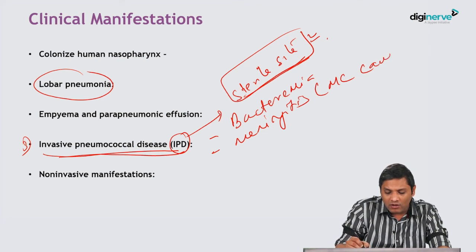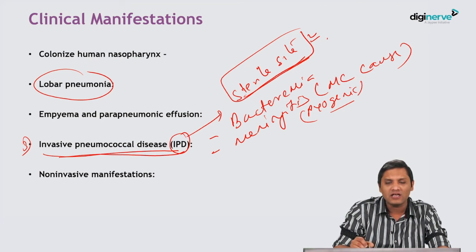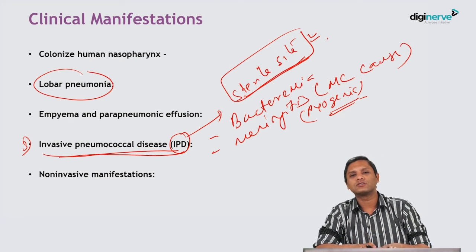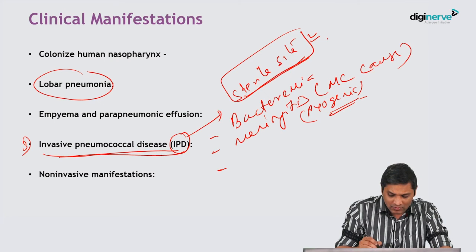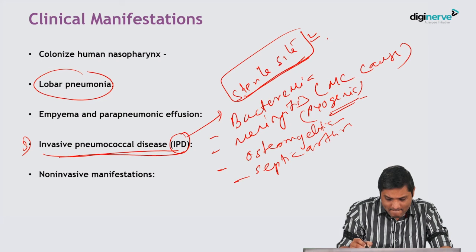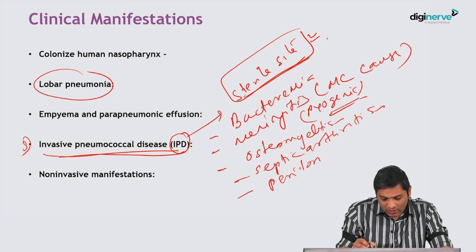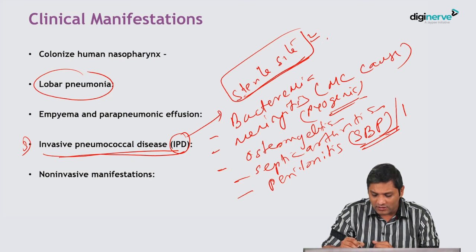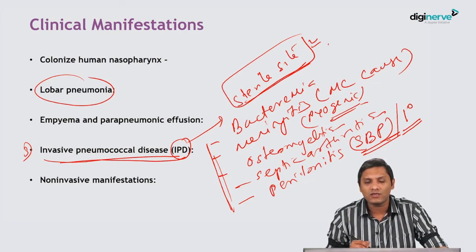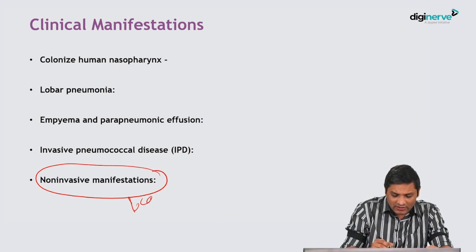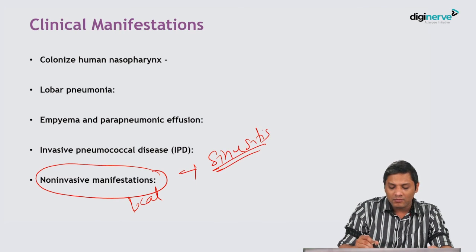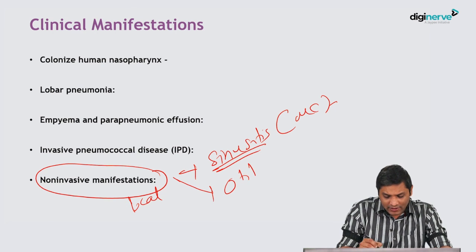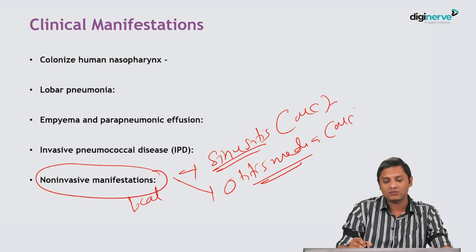Pneumococcus is the most common cause of pyogenic meningitis in all age groups. Other invasive infections include osteomyelitis, septic arthritis, and peritonitis. Pneumococcus is an important cause of spontaneous bacterial peritonitis, also called primary bacterial peritonitis. Additionally, pneumococcus may cause local infections such as sinusitis — it is the most common cause of sinusitis — and otitis media.